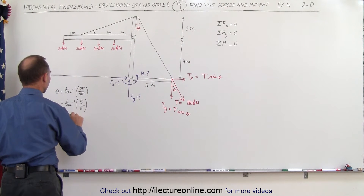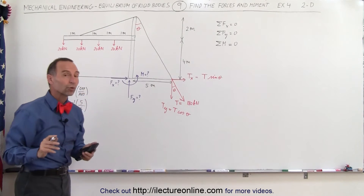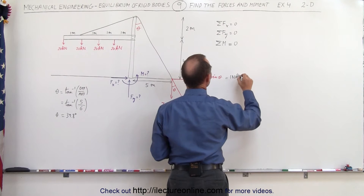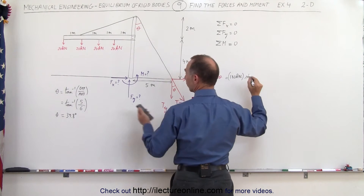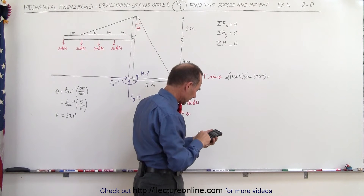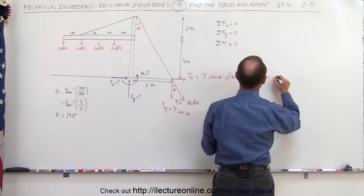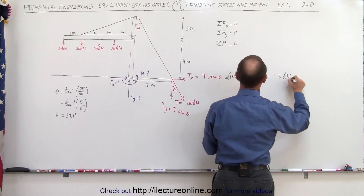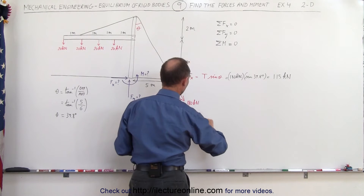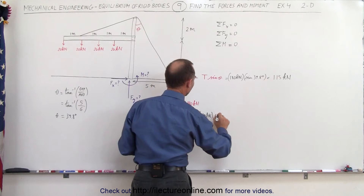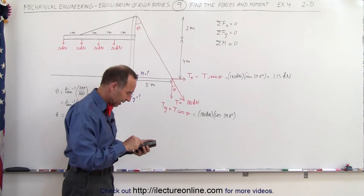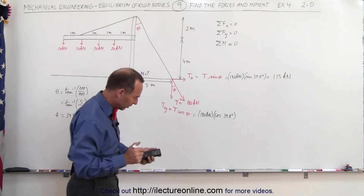With the angle of 39.8 degrees, we can find the vertical and horizontal components of the tension. The horizontal component T_x equals 180 kilonewtons times sine of 39.8 degrees, which gives approximately 115 kilonewtons. The vertical component T_y equals 180 kilonewtons times cosine of 39.8 degrees, giving a force of 138 kilonewtons.